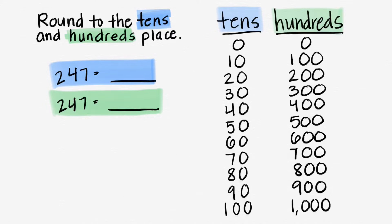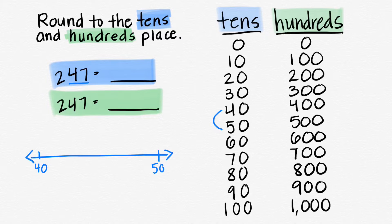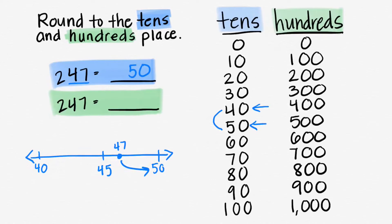We have the number 247 and we're going to round to the tens place, so we're only going to look at the tens and on — we have 47. 47 falls somewhere between 40 and 50. Let's make our number line: we have 40 on one side, 50 on the other, and halfway between 40 and 50 is 45. Now 47 would be a little bit after the 45. Is 47 closer to 40 or closer to 50? We can see it's closer to 50, so we're going to write 50.